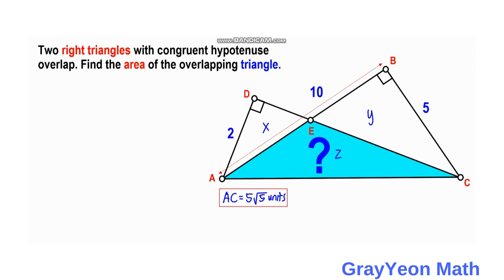Next we get the length of CD. Since ADC is a right triangle and we already have the hypotenuse 5 square root of 5 and one leg is 2 units, we will get CD.